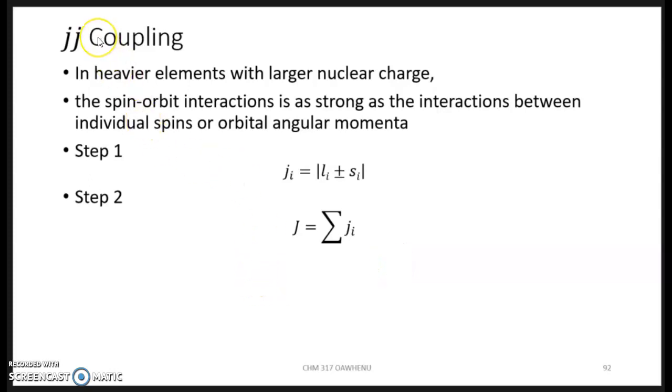In this video we'll talk about JJ coupling. JJ coupling is one of the methods in which the electron spin and the electron orbital motion can interact together to form a resultant J.